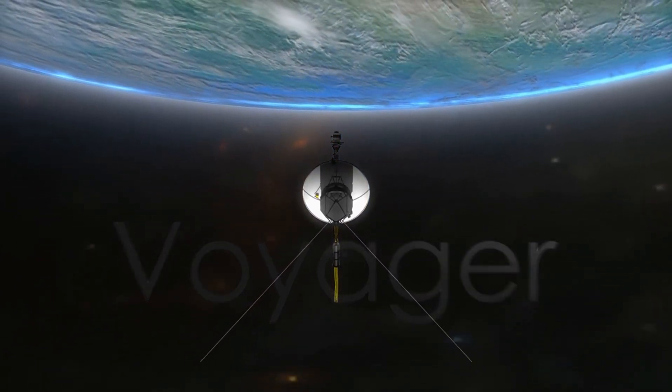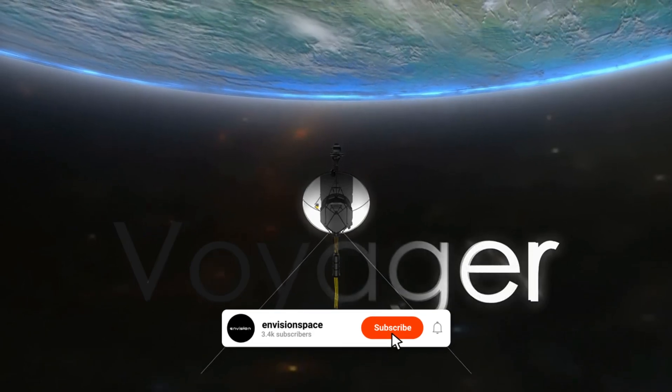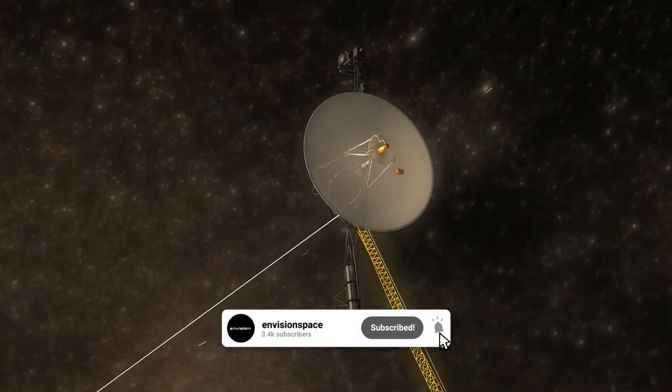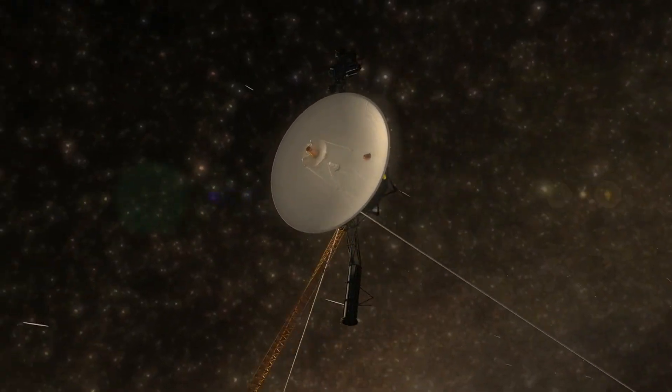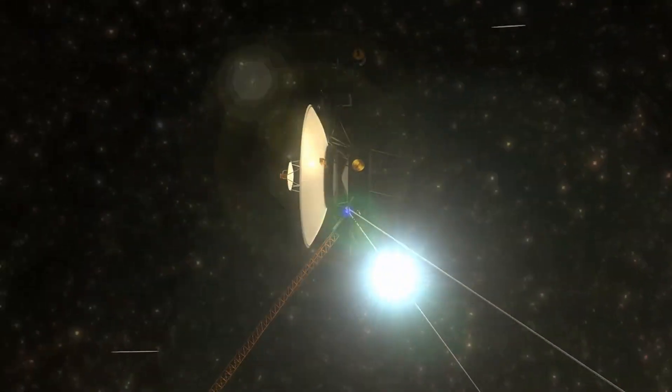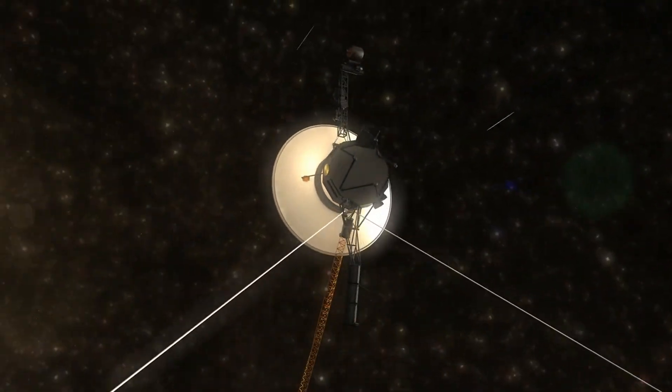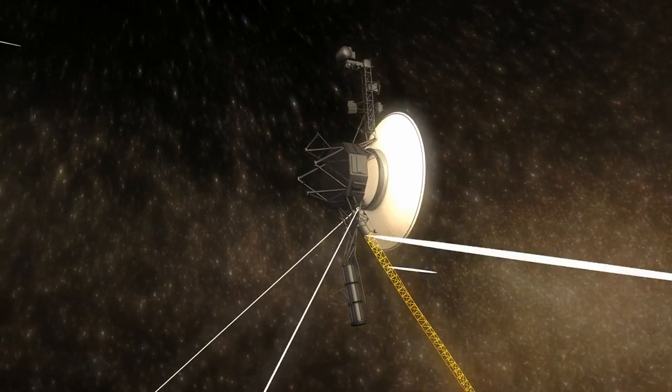After carefully interpreting the confusing signals, the engineers obtained a complete readout of the system's memory. By comparing this readout with one taken before the problem occurred, the Voyager team identified the source of the corruption.